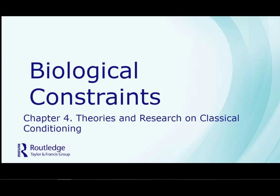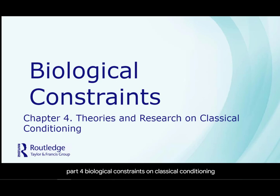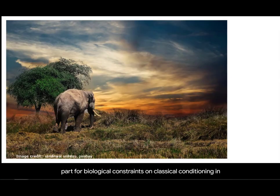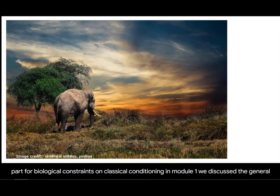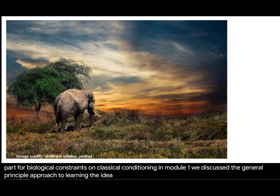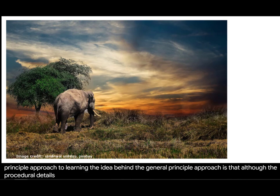Chapter 4, Part 4: Biological Constraints on Classical Conditioning. In Module 1, we discussed the general principle approach to learning. The idea behind the general principle approach is that although the procedural details will differ, the process of learning is conserved across species.